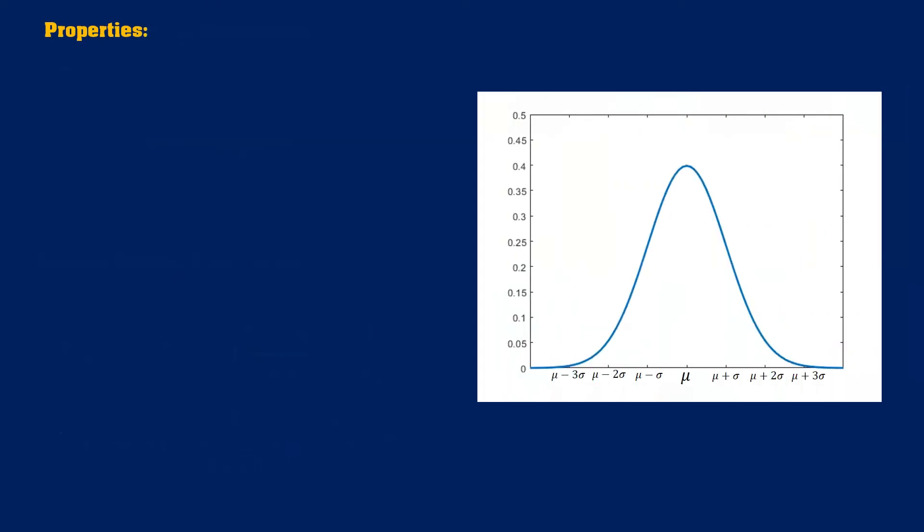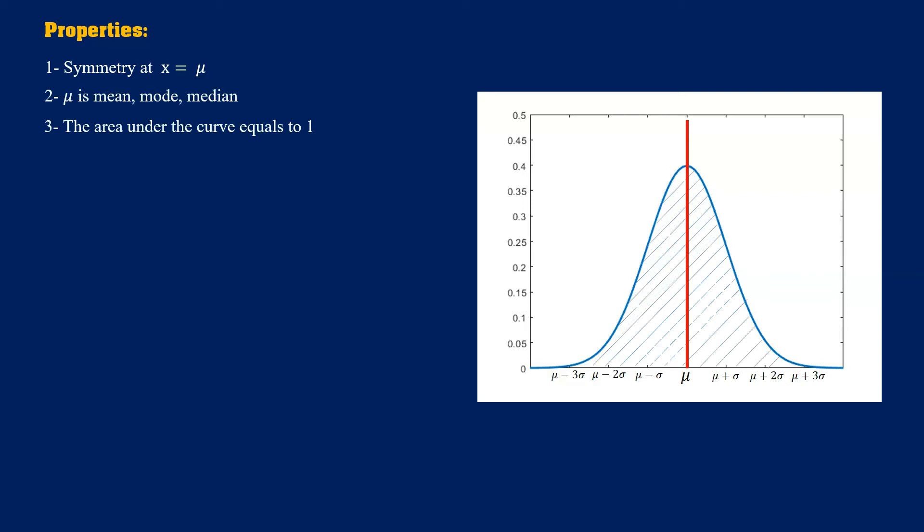Now let's dig deep into the properties of normal distribution. Normal distribution is symmetry at a point of mu. Also, the mu is mean, mode and median at the same time. Since the data is normalized, the area under the curve always equals 1. Also, the figure is unimodal, which means that the figure has only one global maximum point.